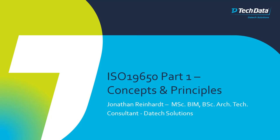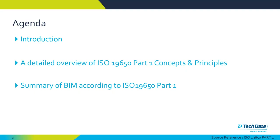This video will present an overview of the ISO 19650 part 1 document in relation to the concepts and principles. The agenda includes a brief introduction to the documents, a detailed overview of the part 1 document looking at the different sections, and then a summary of BIM according to ISO 19650.